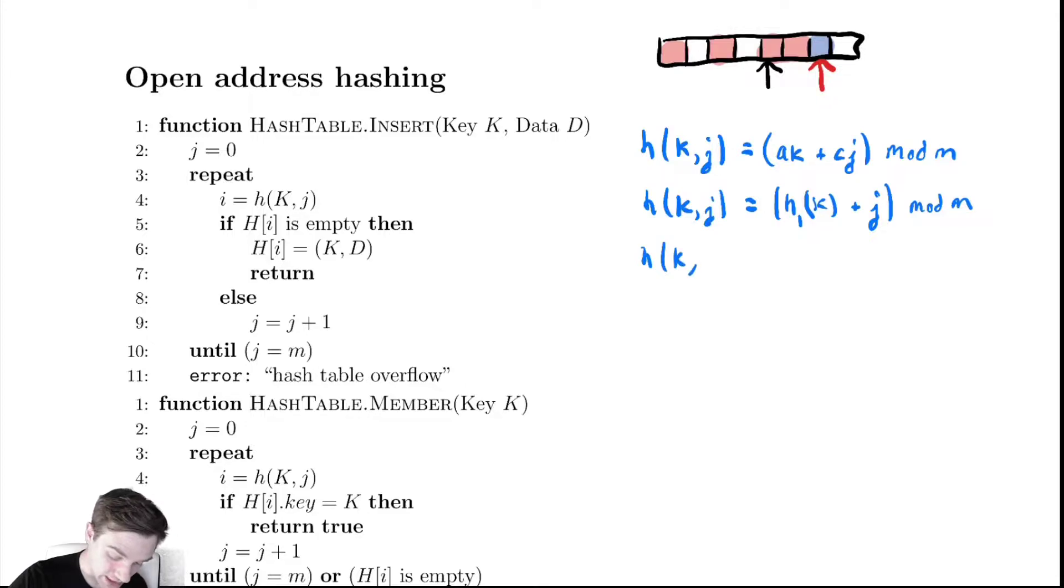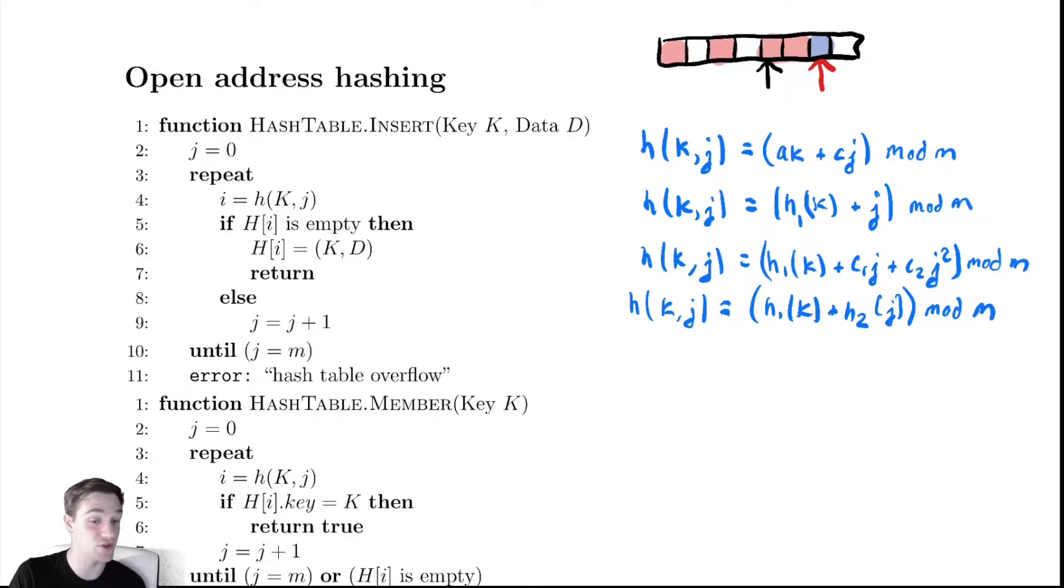Alternative methods: h(k,j) = h1(k) + c1*j + c2*j^2 mod m, that's quadratic hashing. You could also use h1(k) + h2(j), using a hash function on j as well. If h2 is a good choice, it will give you very different values as you rehash.